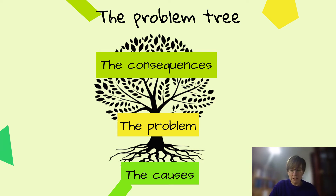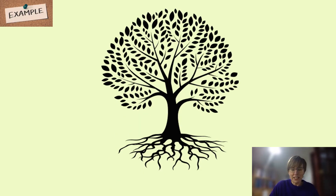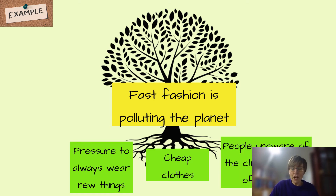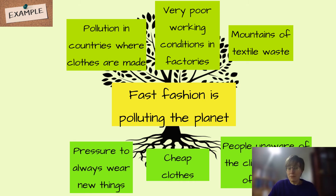We will run through a couple of examples with students — here is one. A team might have fast fashion as the issue they care about. Potential causes they need to come up with could be around peer pressure, cheap clothes, or people being unaware of the climate impact. Looking at the branches, some of the consequences might be pollution, poor working conditions, or mountains of textile waste.